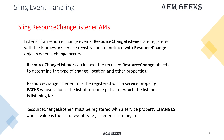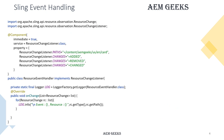You define the configuration using properties in the @Component annotation, similar to the OSGI event handler. There is a property called 'changes' where you define what kind of events to listen to, and another property called 'paths' where you define at what path the handler will be listening to events. You write both these properties inside the @Component annotation.